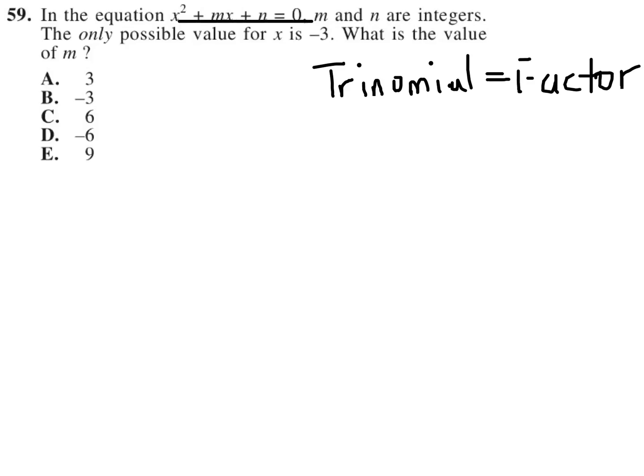The second hint here is that it says the only, italicized, the only possible value for x is negative 3. So x has to equal negative 3. So how do these two things come together to help us answer the question fairly quickly?